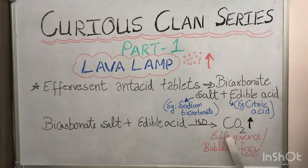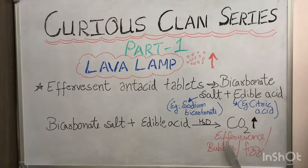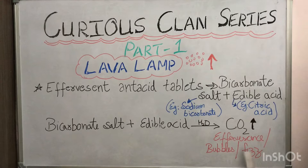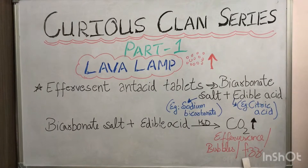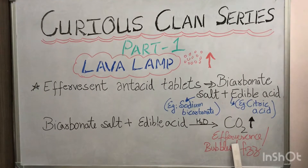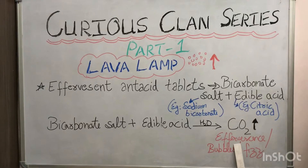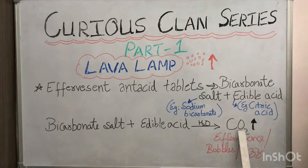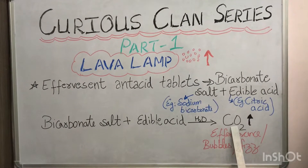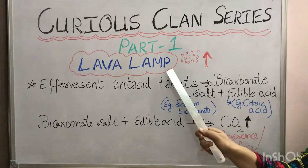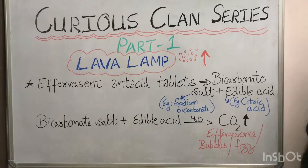This carbon dioxide gas is produced as effervescence, appearing as bubbles in the colored water. When the carbon dioxide bubbles move up and pop at the surface of the oil, they appear like a lava lamp and give a very beautiful effect.